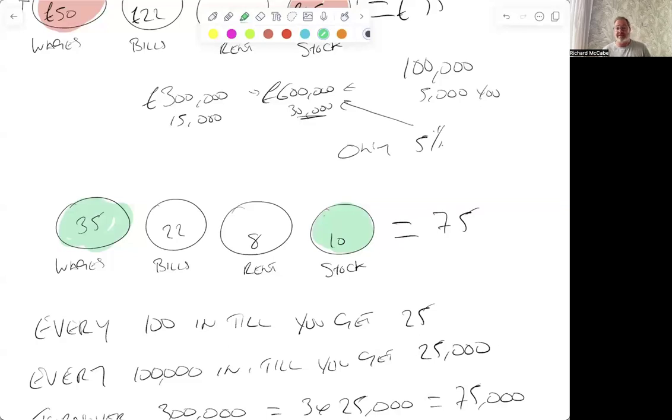The bills and the rent stay the same regardless. So can you imagine for every £100 that gets in the till using this system, it means that all your bills only come to £35 for wages, £22 for bills as normal, rent 8 as normal, stock £10, all bills come to £75 and you are left with £25.